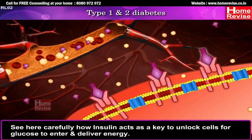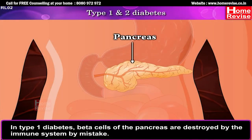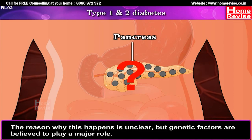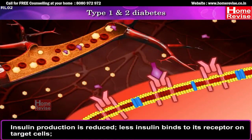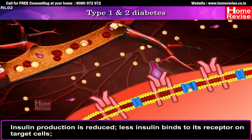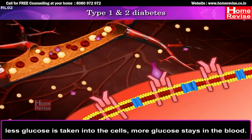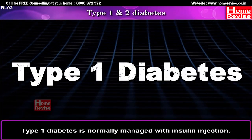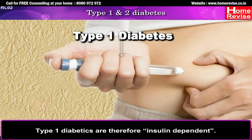In Type 1 diabetes, beta cells of the pancreas are destroyed by the immune system by mistake. The reason why this happens is unclear, but genetic factors are believed to play a major role. Insulin production is reduced. Less insulin binds to its receptor on target cells, and less glucose is taken into the cells — more glucose stays in the blood.